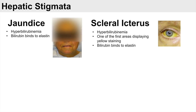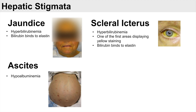Another hepatic stigmata is ascites. Ascites is a collection of fluid within the abdomen and it is due to hypoalbuminemia. Albumin is a highly abundant protein within our blood, produced in the liver. The function of albumin is to create colloidal pressure and draw interstitial fluid back into the blood.